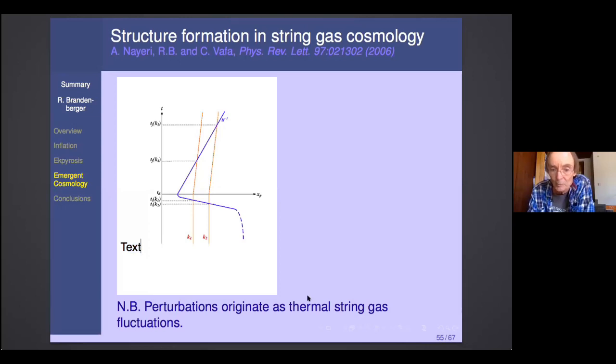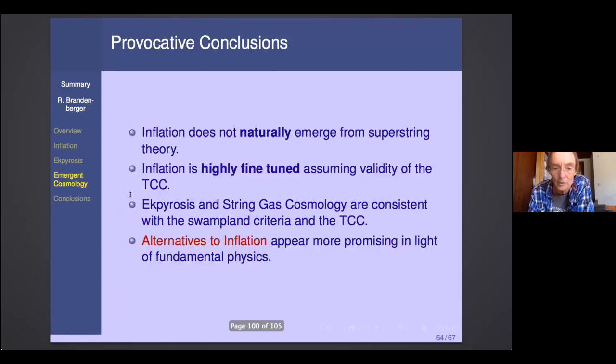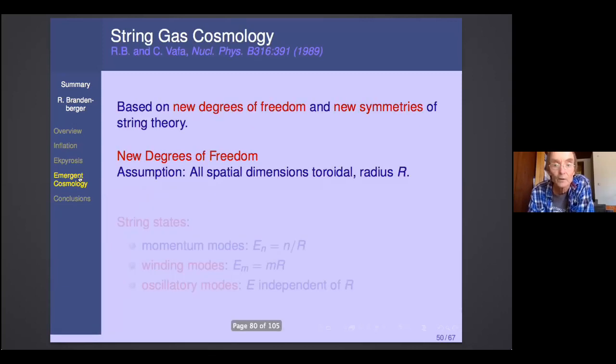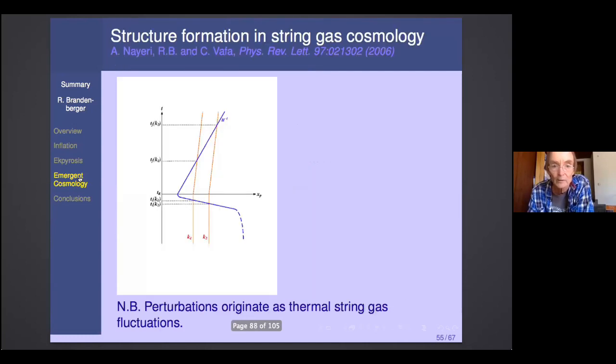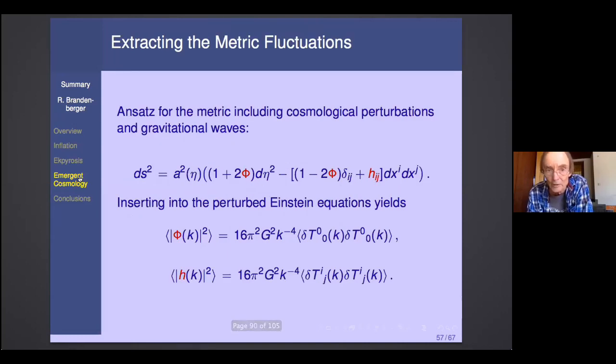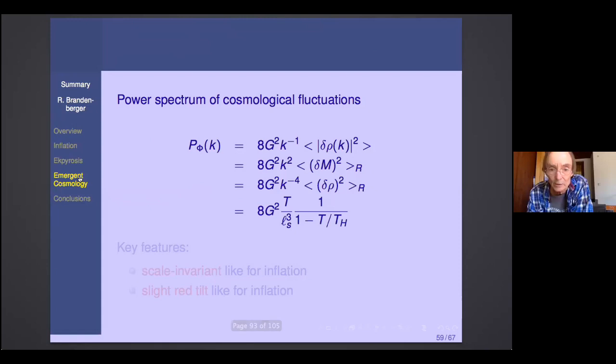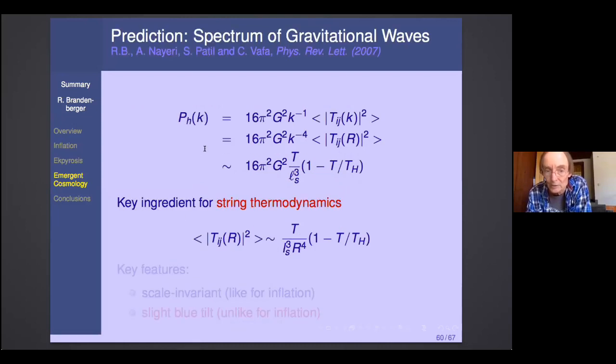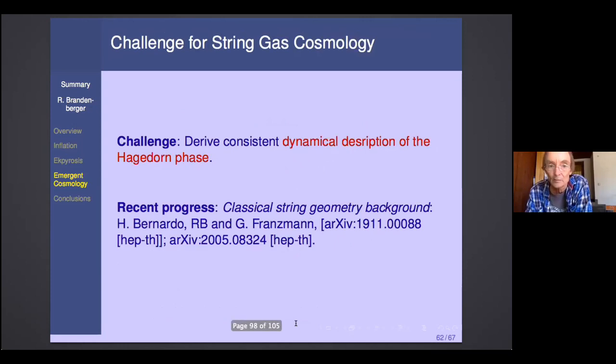So now if you assume that you have this emergent phase, and if you assume that you have thermal fluctuations of strings in this early universe, then you find a scale-invariant spectrum of cosmological perturbations. Unfortunately, I don't have time to give you the calculations. I'll just jump to the main conclusion is that you get a scale-invariant spectrum of density perturbations like for inflation with a slight red tilt like for inflation. The challenge is to derive a consistent dynamical description of the early phase.